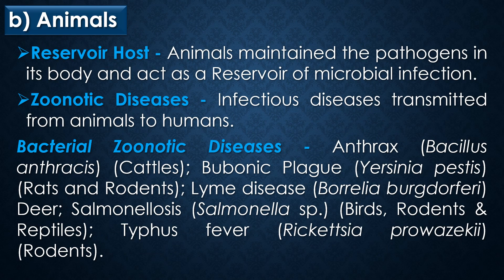The second source of microbial infection is animals. Many pathogens are able to infect both humans and animals. Some animals maintain pathogens in their bodies and act as reservoir hosts. Infectious diseases transmitted from animals to humans are called zoonotic diseases. Examples of bacterial zoonotic diseases include anthrax caused by Bacillus anthracis from cattle, bubonic plague caused by Yersinia pestis from rats and rodents, Lyme disease caused by Borrelia burgdorferi from deer, salmonellosis caused by Salmonella species from birds, rodents and reptiles, and typhus fever caused by Rickettsia prowazekii from rodents.